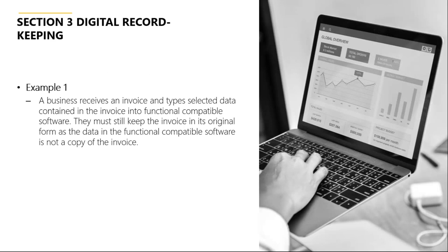Section 3 is the specific area of legislation that interests us for the purpose of this webinar. The section is titled 'Digital Record Keeping' and it contains very specific information relating to the life cycle of an invoice upon receipt. It's highlighted with two examples in the notice. The first is on your screen now — taken directly from the notice — and revolves around what ITsoft term a manual accounts payable process, whereby invoices received into the business are manually keyed into accounting software or ERPs.